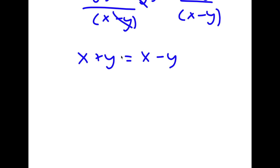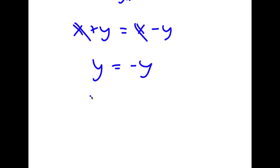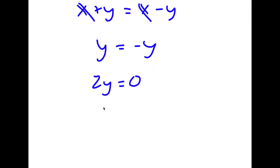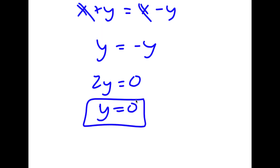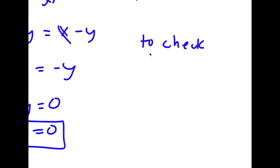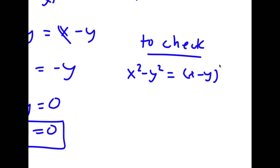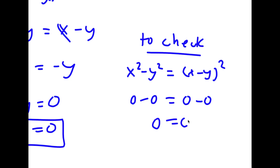I have x plus y equals x minus y, and I can cancel the two x's. So now I have y is equal to negative y, meaning 2y equals zero and y equals zero. To check: if both variables are zero, then zero minus zero equals zero minus zero squared, meaning zero equals zero.